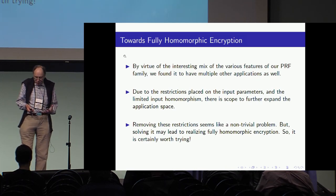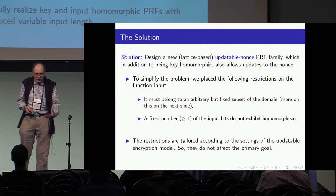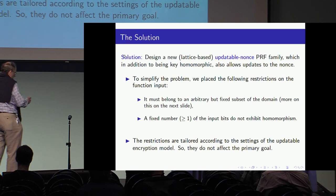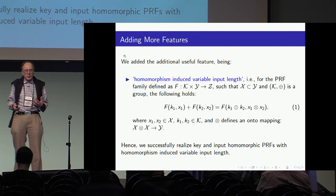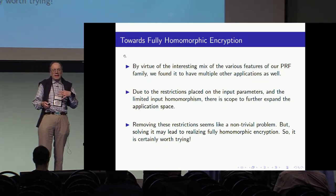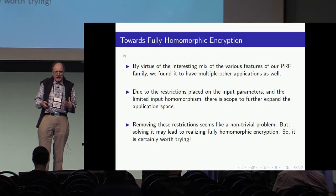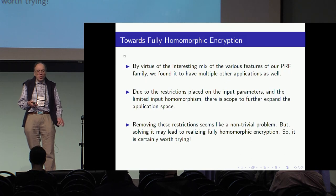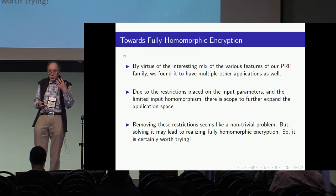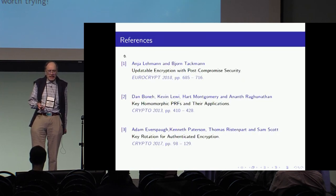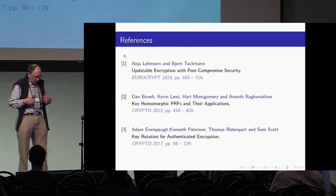The question now is what we actually had to do in order to make this feasible was to introduce these restrictions which I pointed out before. The question that we did not address is: can you actually remove these restrictions? And if you can remove the restrictions, it might be possible to move towards fully homomorphic encryption, which we know — if you want to make this practical — is a major open problem. That's basically the end of the talk. Thank you for your attention.